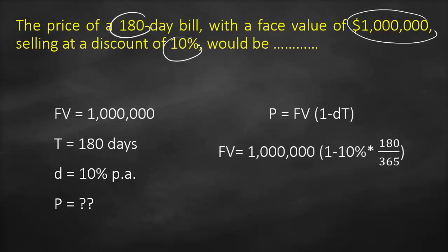So we'll substitute here. We'll get 1 million multiplied by (1 minus 10% multiplied by 180 divided by 365).